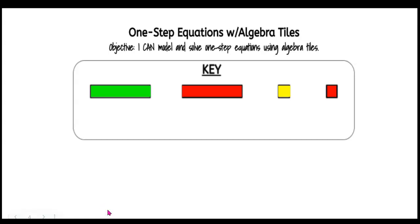Our objective today is to model and solve one-step equations using algebra tiles. First, let's remember what those algebra tiles represent. The green bar represents positive X — remember that X is a variable we use quite often in math. The red bar represents negative X, which we'll use quite a bit in seventh grade. The yellow tile represents positive 1, and the red tile represents negative 1.